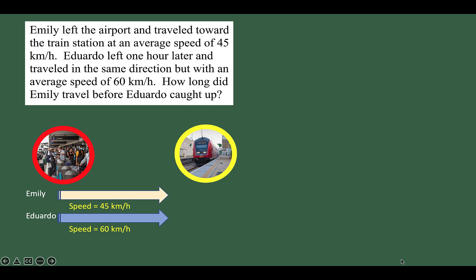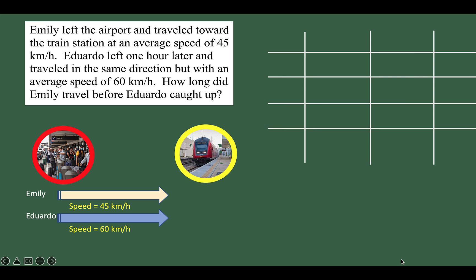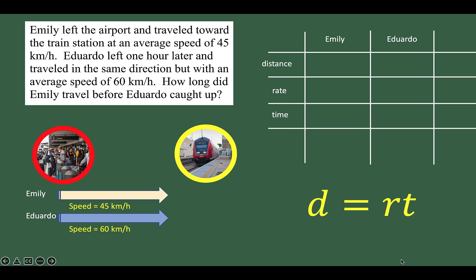Now let's solve this problem together. The strategy is to organize the given information in a table. There are two main characters here: Emily and Eduardo. Let's recall that distance is equal to rate times time. So for our row labels, let's write distance, rate, and time.